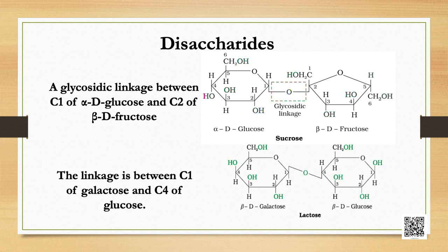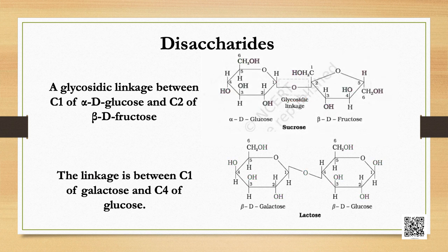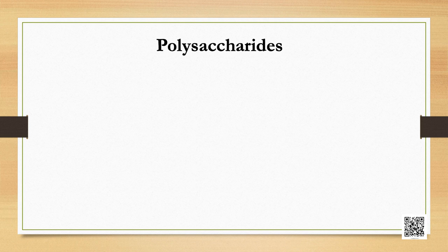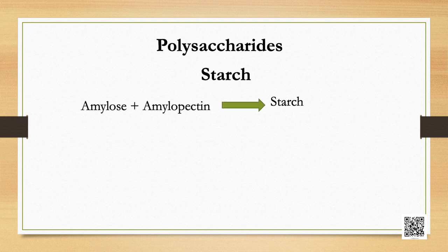Lactose, more commonly known as milk sugar, is composed of beta-D-galactose and beta-D-glucose. The linkage is between C1 of galactose and C4 of glucose. A free aldehyde group may be produced at C1 of the glucose unit, hence it is also a reducing sugar.